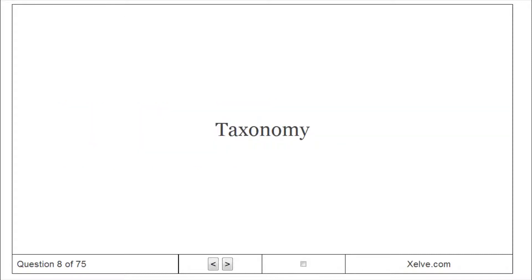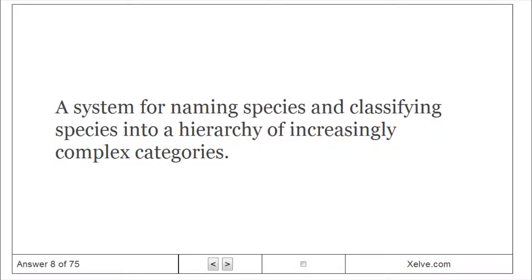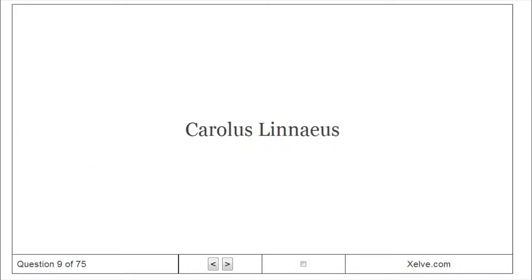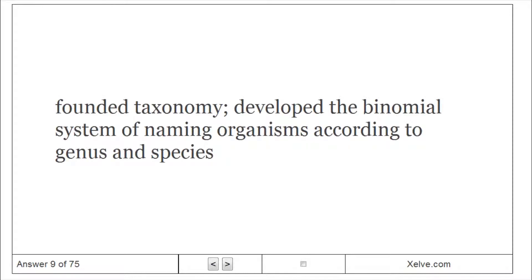Taxonomy: A system for naming species and classifying species into a hierarchy of increasingly complex categories. Carolus Linnaeus founded taxonomy, developed the binomial system of naming organisms according to genus and species.